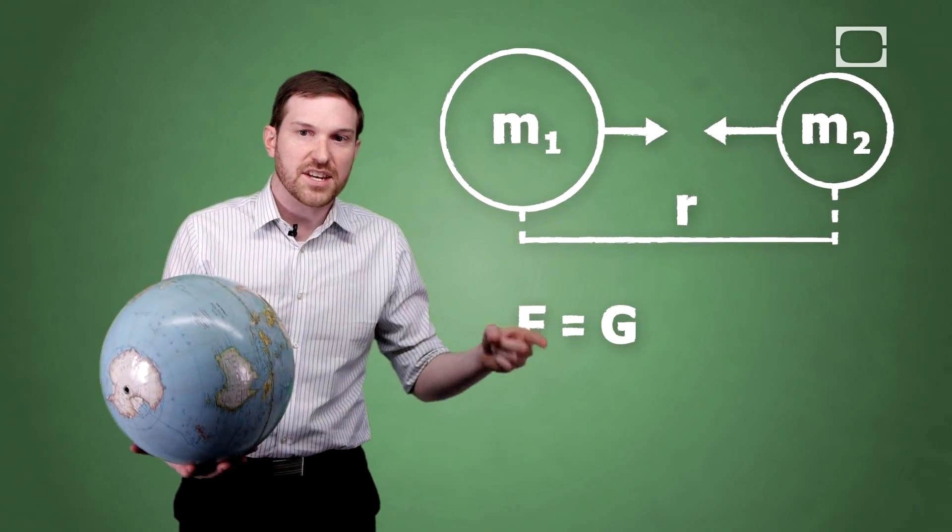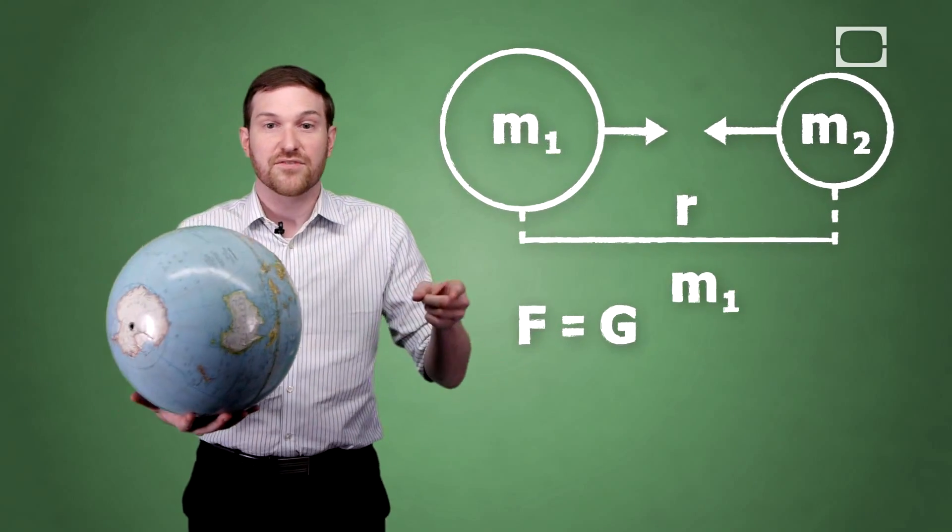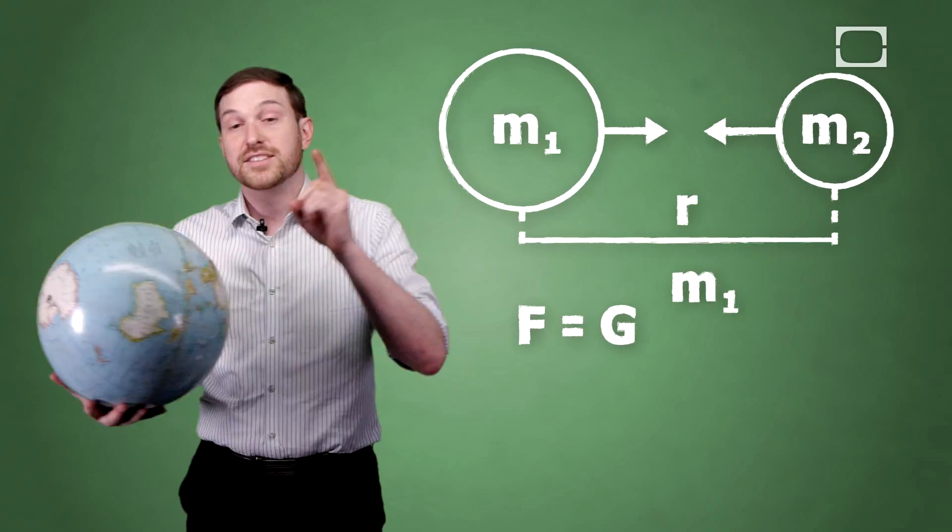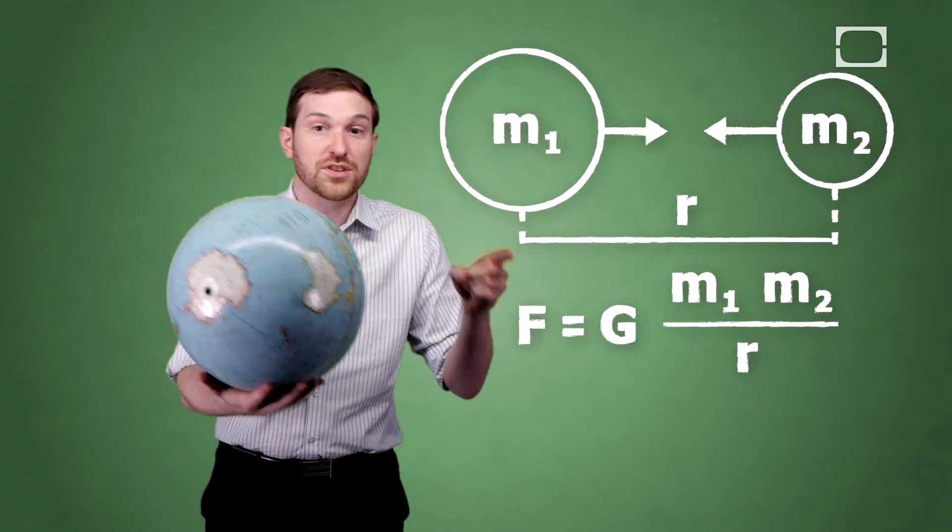He then came up with an equation that expresses the gravitational attraction the two spherical objects have on one another. It's force equals the gravitational constant times the mass of the first object times the mass of the second object over the distance between the two objects squared. Assume that Earth is one of these masses and that a one kilogram sphere is the other.